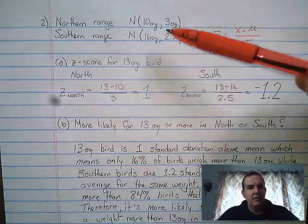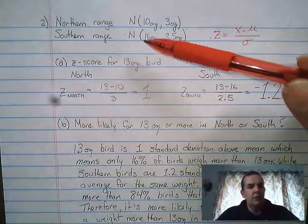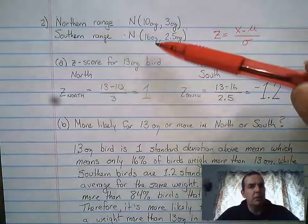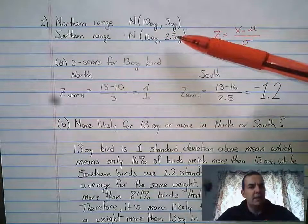standard deviation of 3 ounces, while the southern range birds are also normally distributed with a mean weight of 16 ounces and a standard deviation of 2.5 ounces.